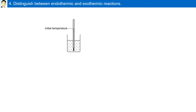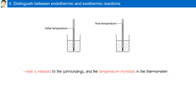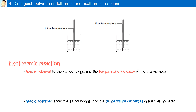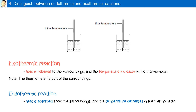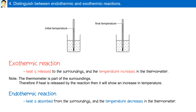How can we distinguish between endothermic and exothermic reactions? Here we have a sample with an initial temperature, and after a reaction, the temperature increased. Heat was released to the surroundings, causing the temperature on the thermometer to increase. This is known as an exothermic reaction — the liquid solution released heat to the environment, the thermometer absorbed it, and its temperature increased. If heat is absorbed from the surroundings, there would be a decrease in temperature on the thermometer, and this is called an endothermic reaction. Note: the thermometer is part of the surroundings. To help you further, imagine your hand is a thermometer — the initial temperature from the beaker would feel cool, compared to the final temperature where your hand will feel warmer.